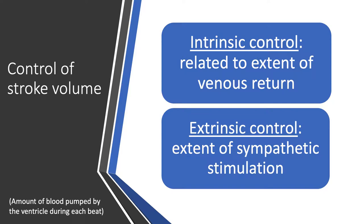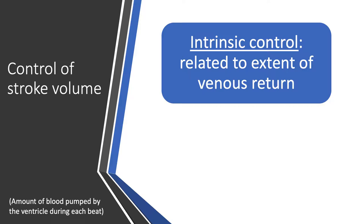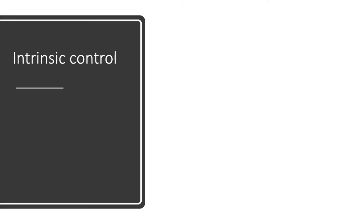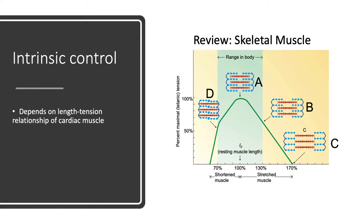Control of stroke volume — the amount of blood pumped by each ventricle during each beat — is under both intrinsic and extrinsic control. Intrinsic control refers to things built in, the heart's inherent ability to vary stroke volume, related to the extent of venous return. Extrinsic control comes from outside the heart — the heart is under control of the sympathetic nervous system, so it's the extent of sympathetic stimulation.